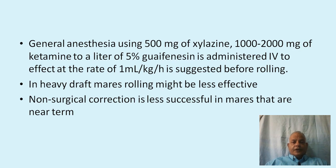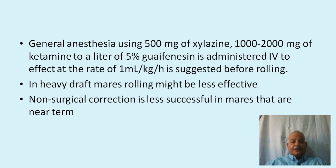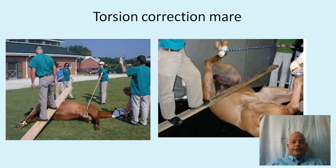General anesthesia is recommended before attempting correction of uterine torsion in mares, using 500 mg of xylazine and 1000 to 2000 mg of ketamine added to a liter of 5% guaifenesin, administered intravenously to effect at the rate of 1 ml per kg per hour. Rolling might be less effective in heavy draft mares, and non-surgical correction is less successful in mares that are near term. Torsion correction in mares is similar to cattle but requires general anesthesia.